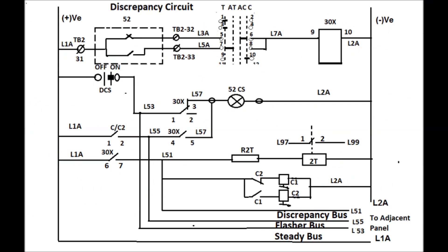Discrepancy relay circuit has been shown in this figure. It has mainly five bus wires coming from the bus coupler or bus transfer panel.